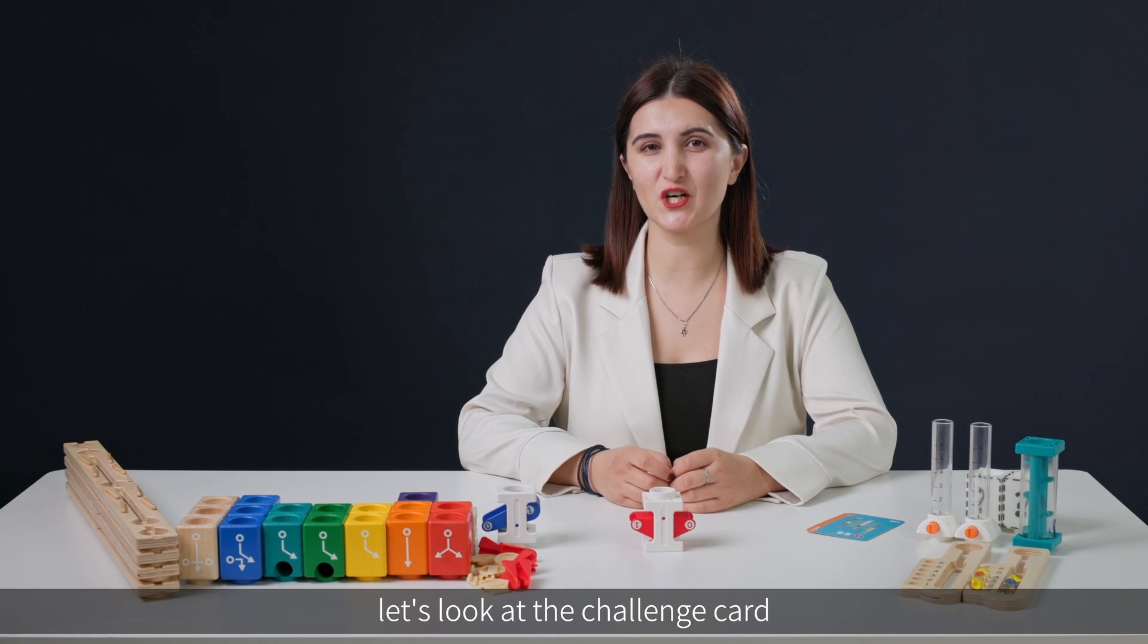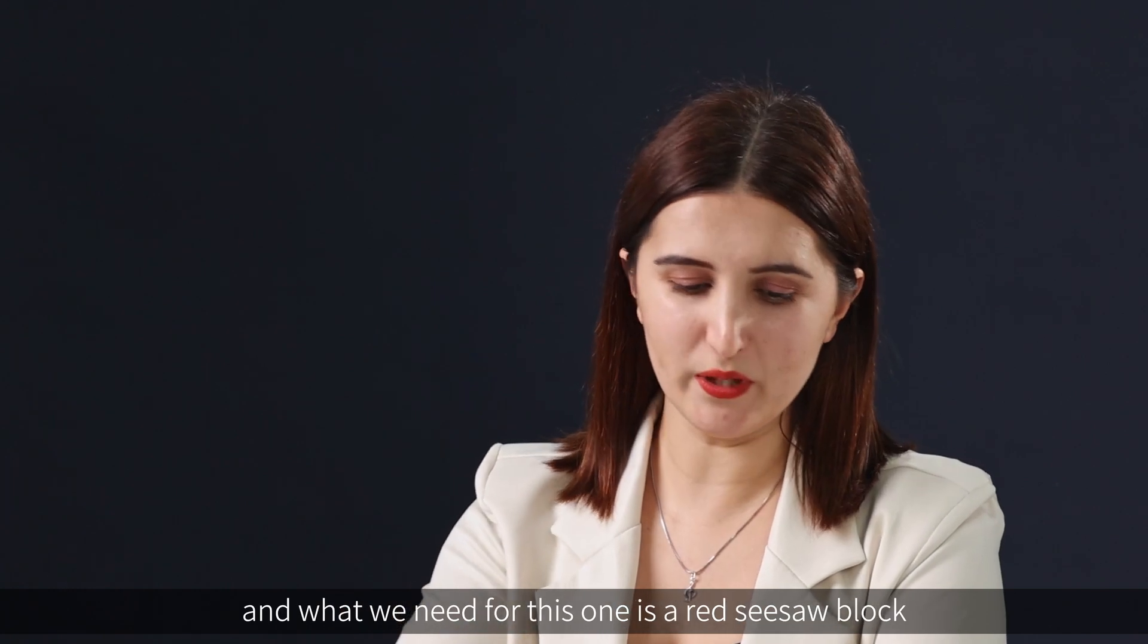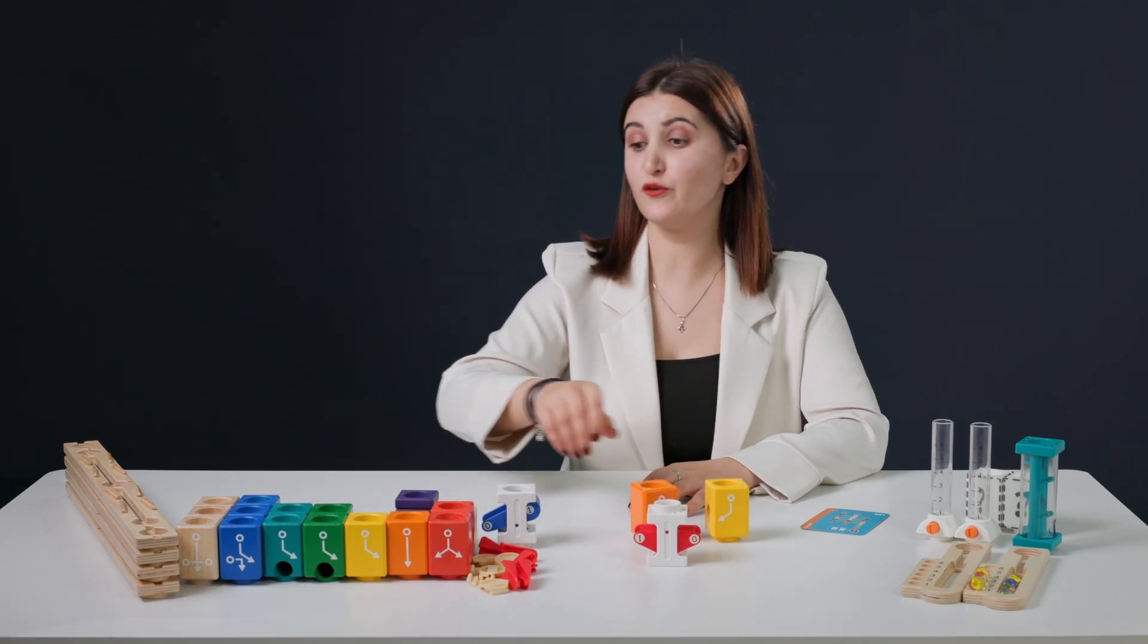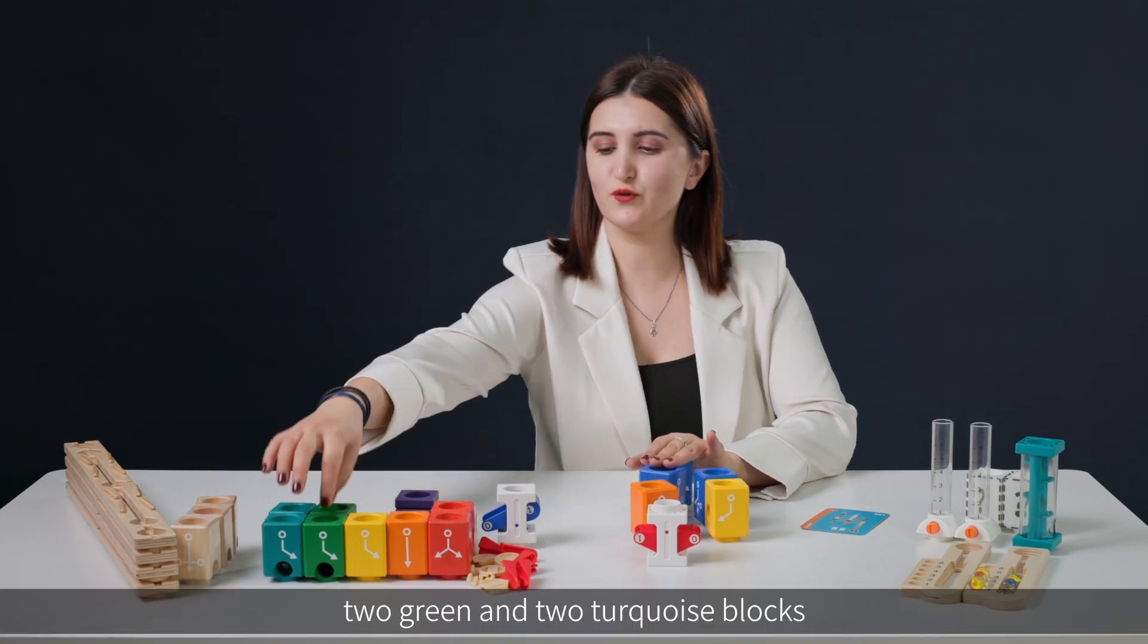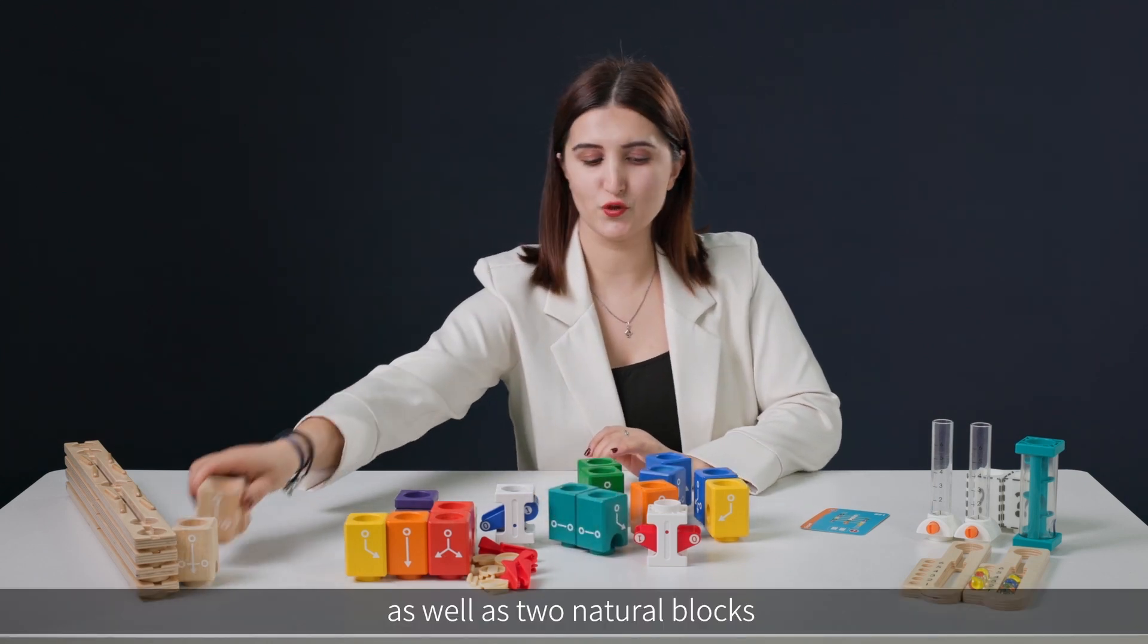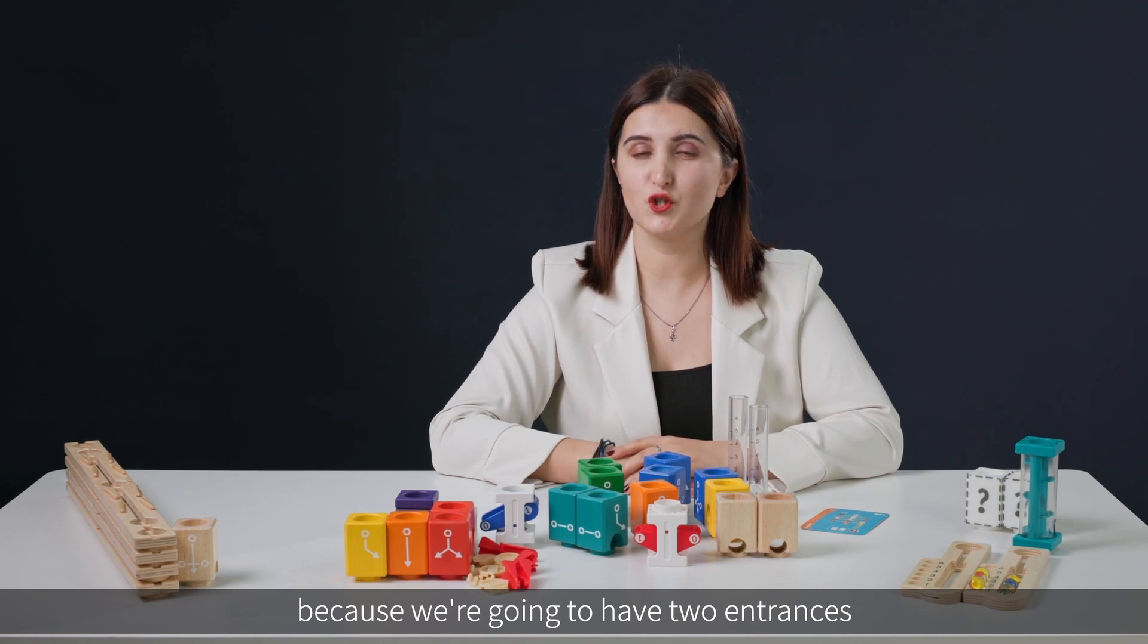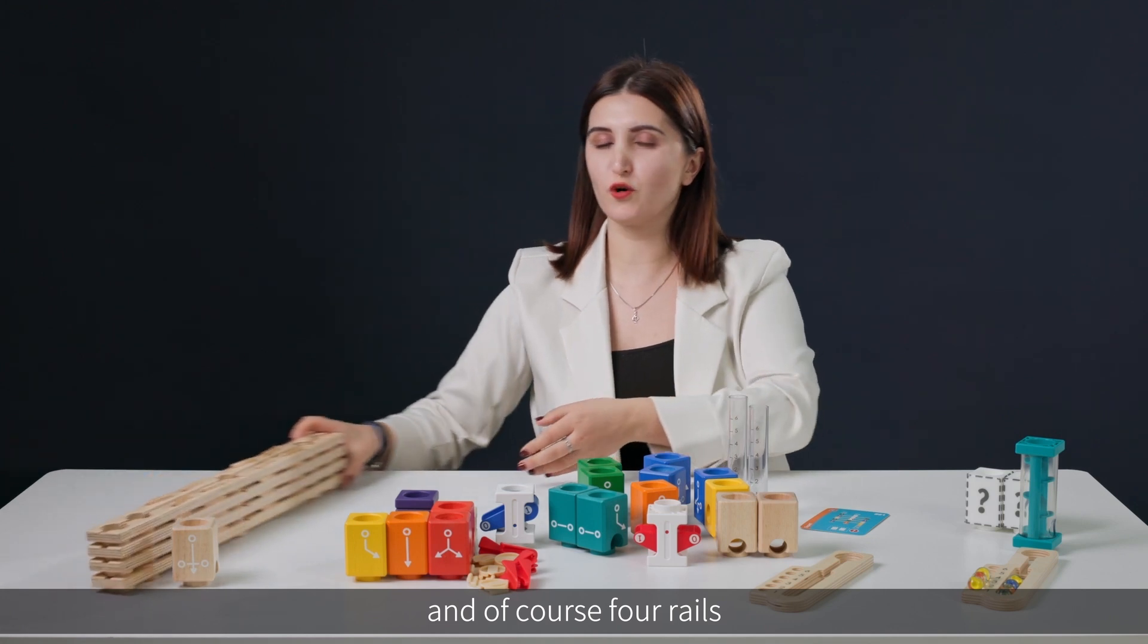First of all let's look at the challenge card and find the corresponding blocks. Here is our challenge card and what we need for this one is a red seesaw block, one yellow block and one orange block, three blue blocks, two green and two turquoise blocks as well as two natural blocks, and make sure you have two marble launchers because we're going to have two entrances and a marble collector and of course four rails.